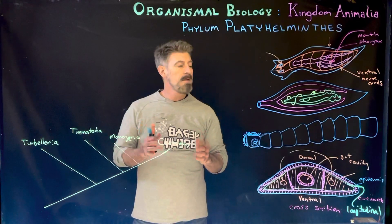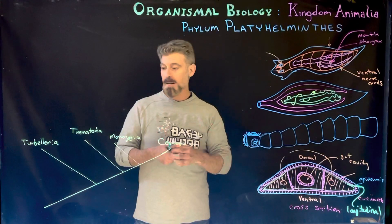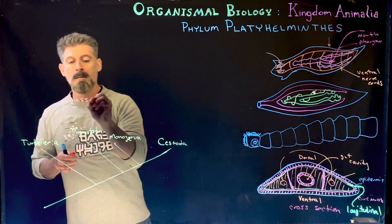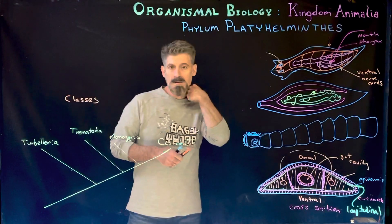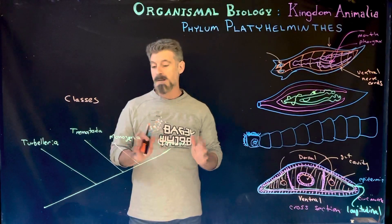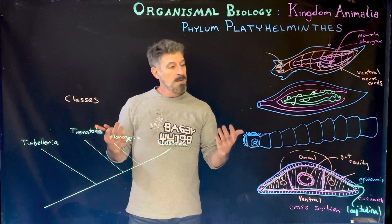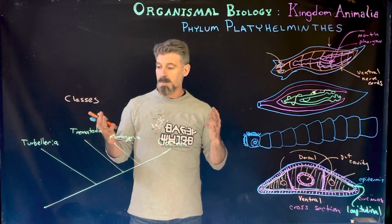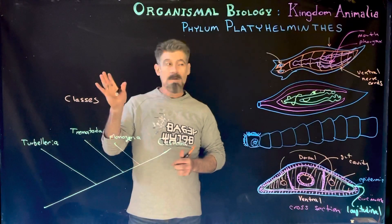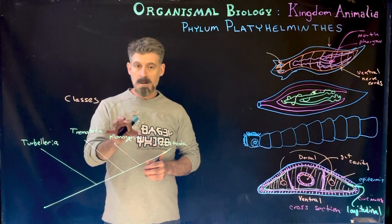We'll briefly talk about the different classes of the Platyhelminthes. I mentioned in the previous lecture that this group is likely more of a paraphyletic group and potentially even polyphyletic. However, focusing on traditional classification, we have four classes of the Platyhelminthes: Turbellaria, Trematoda, Cestoda, and Monogenea.